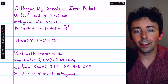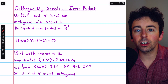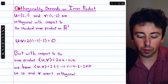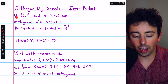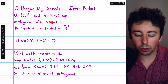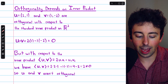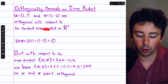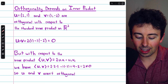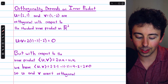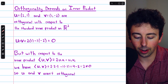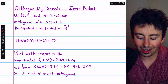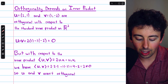The angle between two vectors depends on the inner product being considered, so whether or not two vectors are orthogonal can also change depending on the inner product. For example, vectors u and v are orthogonal with respect to the standard dot product on R²: multiplying their corresponding components and adding gives 2 plus negative 2, which is 0. But under a different inner product — a weighted Euclidean inner product where the product of the first components is doubled — the inner product of u and v is 2 times the product of first components plus the product of second components, which equals 2, not 0. So u and v are not orthogonal with respect to this inner product.